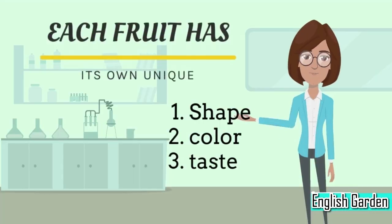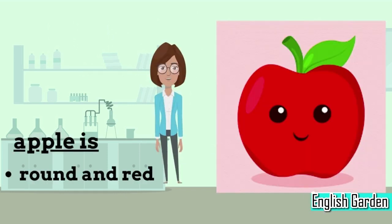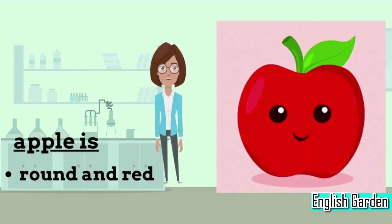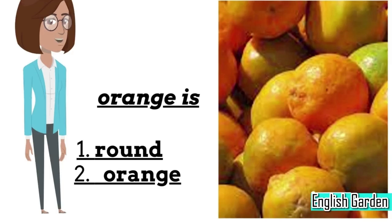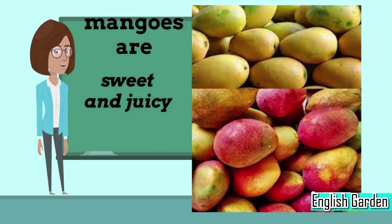Each fruit has its own unique shape, color, and taste. For example, an apple is round and red, while an orange is round and orange. Grapes grow on vines and come in different colors like green, purple, and black. Mangoes are juicy and sweet, and have a unique shape and color.